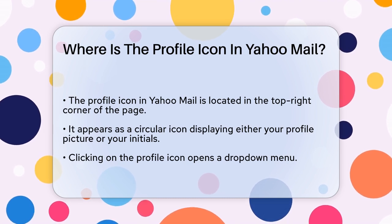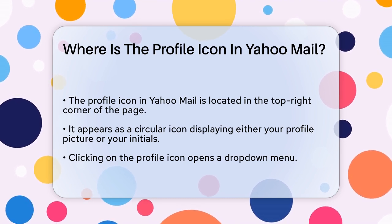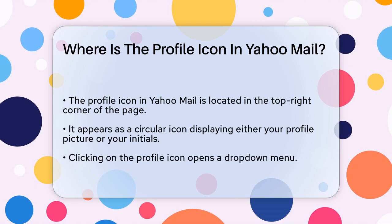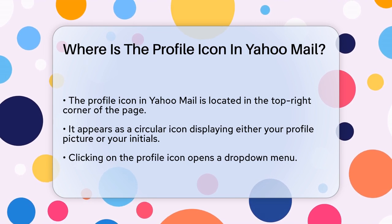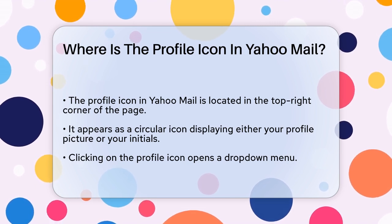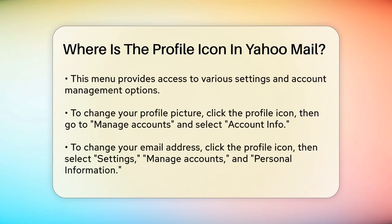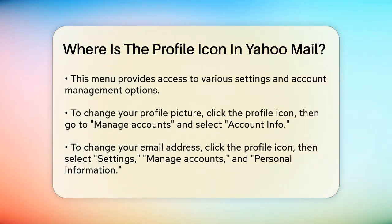When you log into your Yahoo Mail account, the first thing you need to do is look at the top right corner of the page. This is where you'll find the profile icon. It's a circular icon that either displays your profile picture or your initials if you haven't set a picture yet.